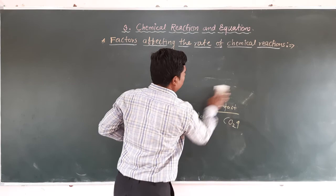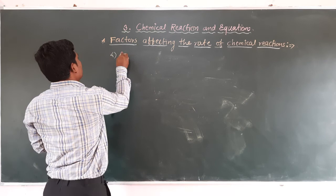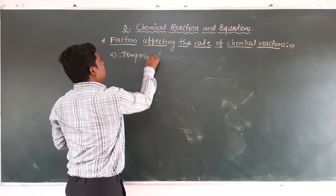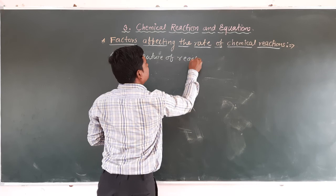So concentration of the reactant is the next factor covered. Moving on, the next factor — the fourth factor — that affects the rate of chemical reaction is the temperature of the reaction.